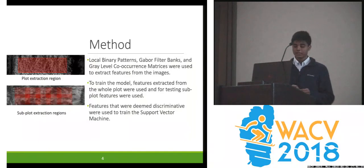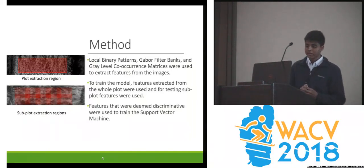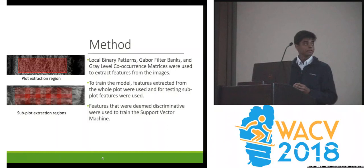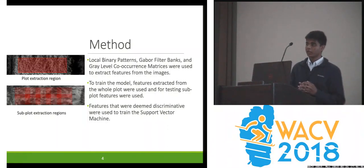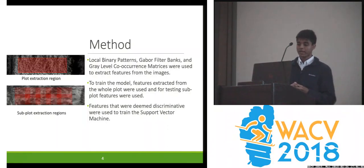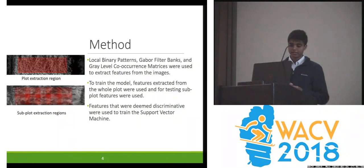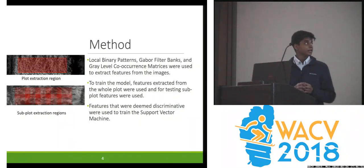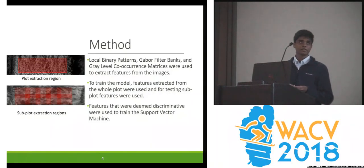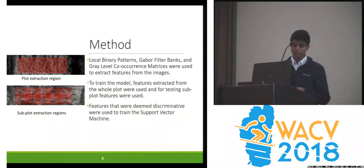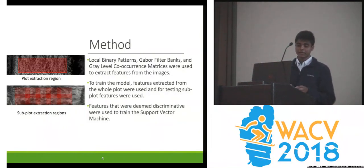In order to do this, we decided to use a support vector machine trained with textural features. To compare different methods of textural features, we used local binary patterns, Gabor filter banks, and gray-level co-occurrence matrices. For training, we only used features extracted from the whole plot due to labelling being for the whole plot, and only features that were deemed discriminative were used in the training.